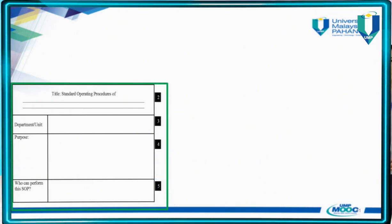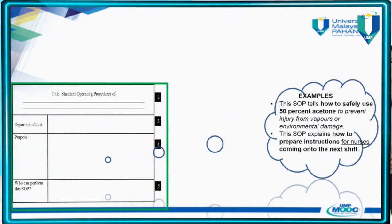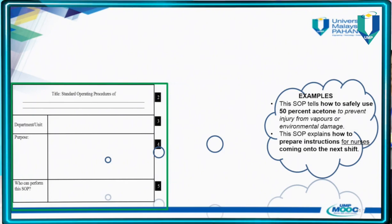For example: 'This SOP tells how to safely use 50% acetone to prevent injury from the vapors.' If you look at the examples given, you will notice that the phrase 'this SOP' is followed by action verbs such as 'tells' or 'explains.' In the second example: 'This SOP explains how to prepare instructions.' So when writing the purpose, you need to use action verbs like 'tells,' 'explains,' 'instructs,' or 'teaches' — for example, 'this SOP instructs you how to do something.'